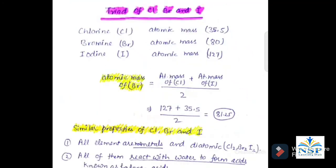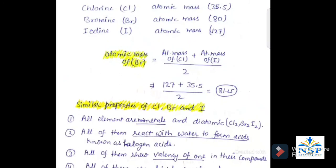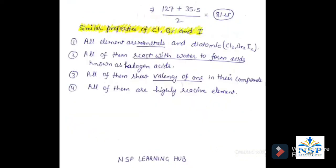The third triad of Dobereiner contains chlorine, bromine, and iodine. Chlorine has atomic mass 35.5, bromine has atomic mass 80, and iodine has atomic mass 127. The atomic mass of the middle element bromine is equal to the average of chlorine and iodine, which is 81.25, nearest to 80. Similar properties: all are non-metals and are diatomic; all react with water to form acids known as halogen acids; all show a valency of one; and all are highly reactive elements.